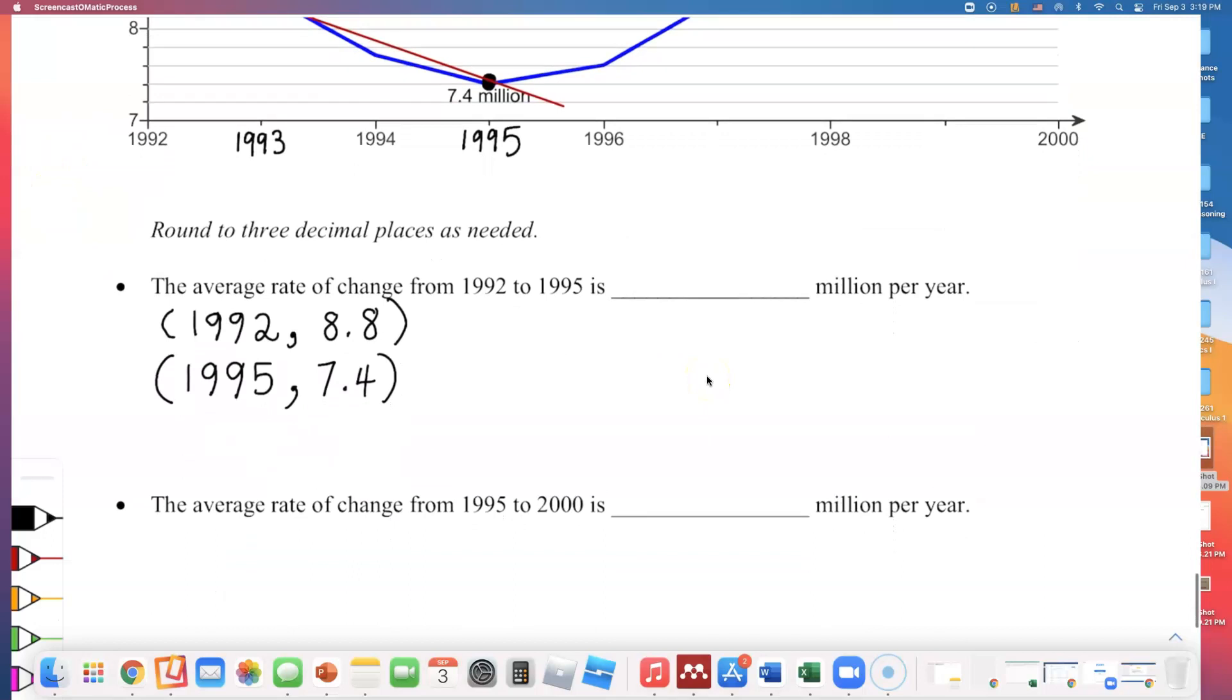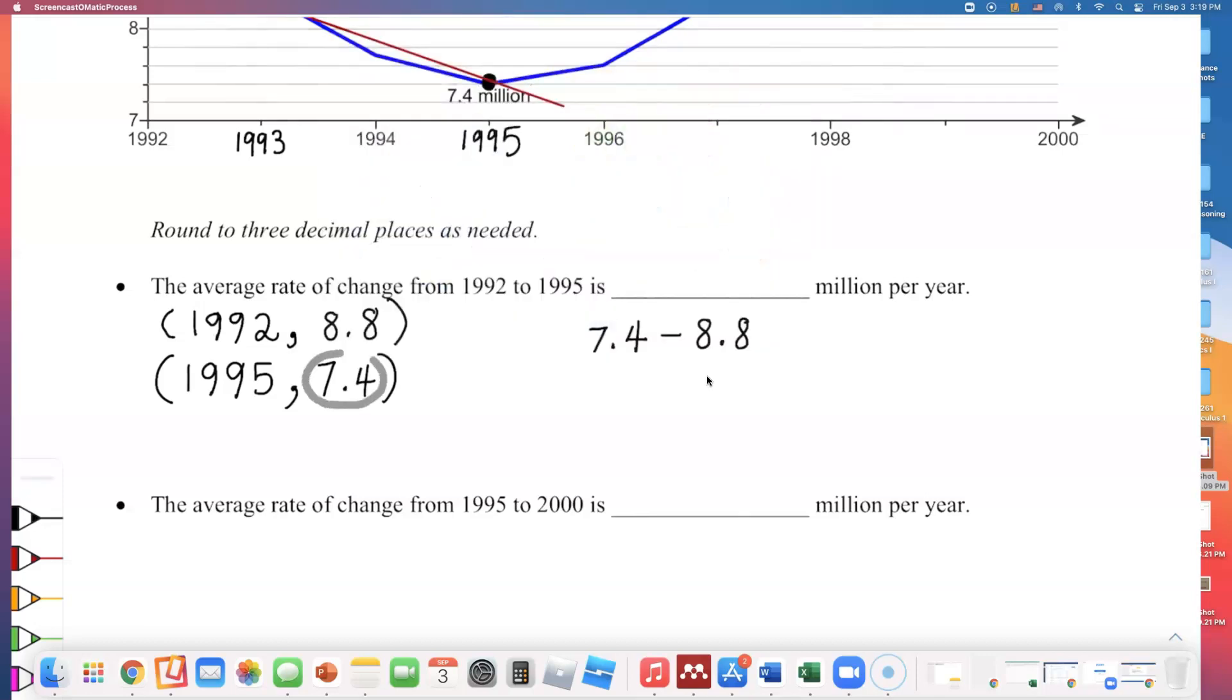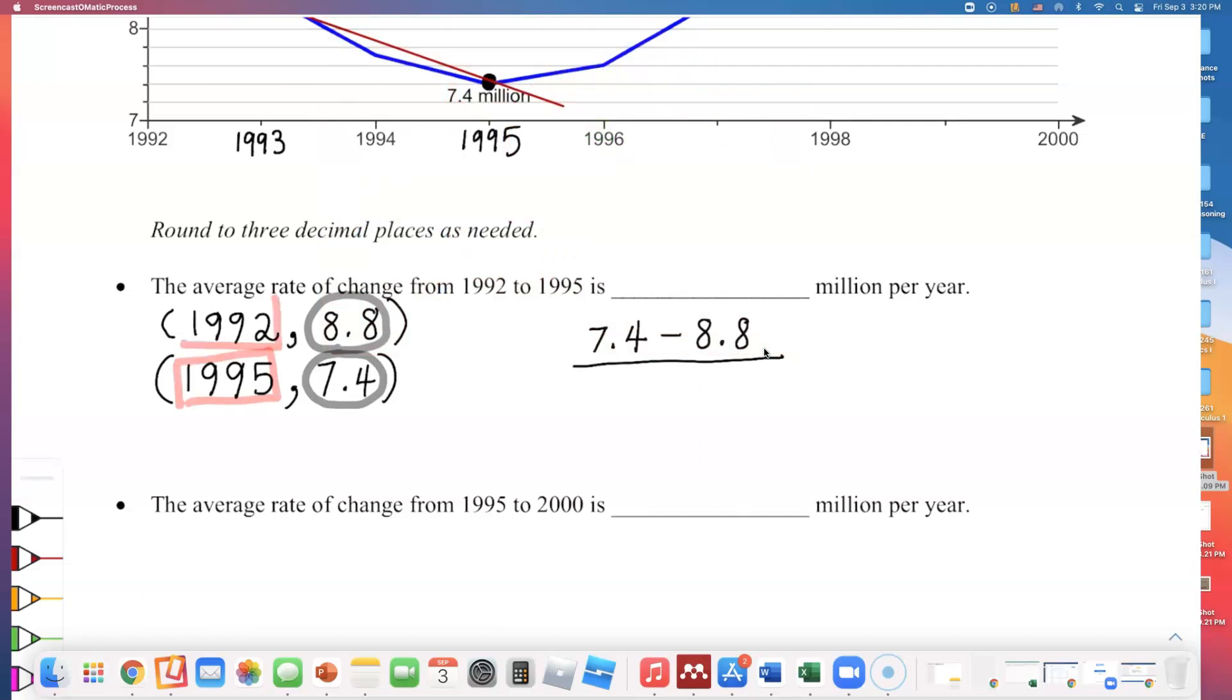Let's do the average rate of change formula. That's going to be 7.4 minus 8.8. I'm subtracting the y values. I'm subtracting this number minus this number. Because the change in y is rise, change in the output variable, divided by the bottom of the fraction. I will subtract the x variables, or the time in this case, 1995 minus 1992.